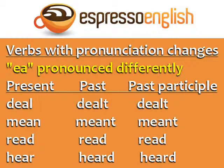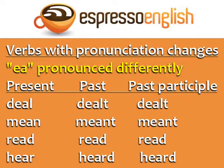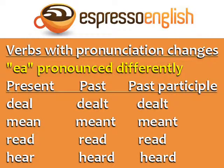Another group has EA pronounced differently from the present to the past and past participle. Deal — dealt — dealt. Mean — meant — meant. Read — read — read. Hear — heard — heard.